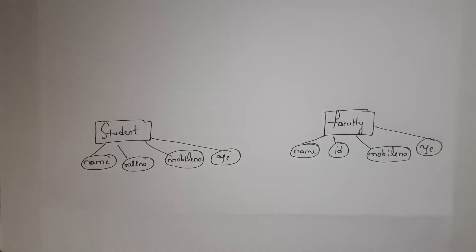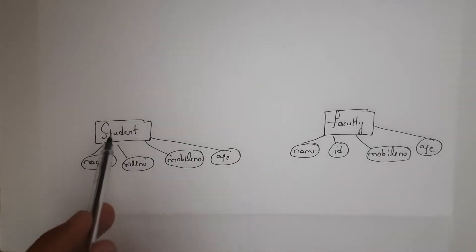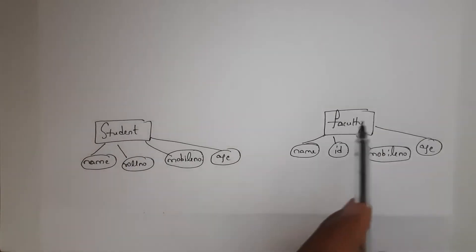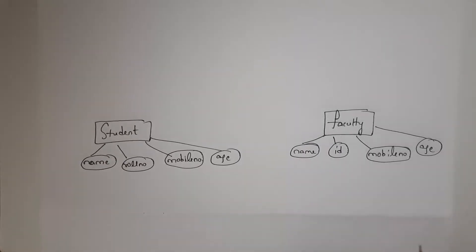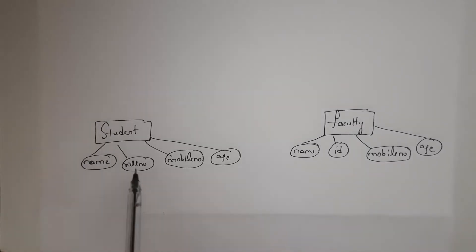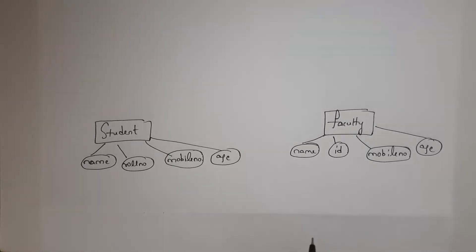We represent an entity in a rectangle. So inside the rectangle I've written 'Student' and inside another rectangle I've written 'Faculty.' An entity is nothing but a table name. The student entity contains various attributes like name, roll number, mobile number, and age. We represent attributes in an ellipse. Attributes are nothing but column names.